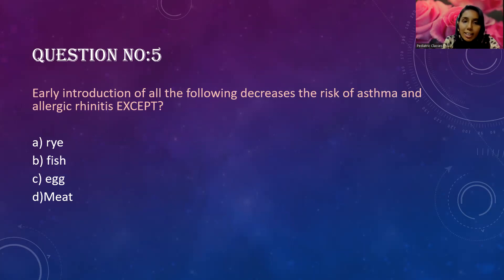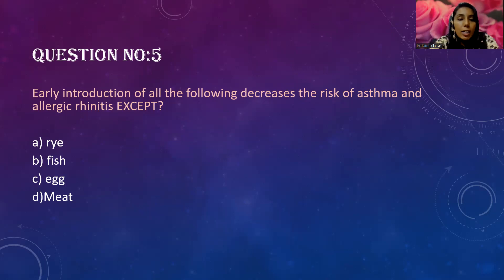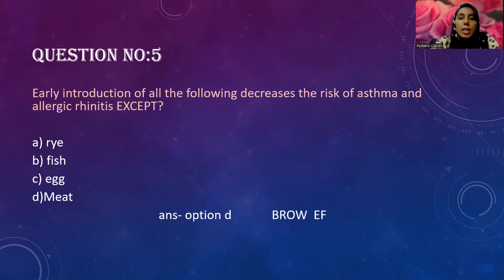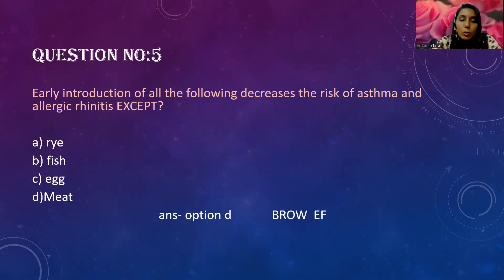Question five: early introduction of all the following decreases the risk of asthma and allergic rhinitis, EXCEPT — Option A: rye; Option B: fish; Option C: oats; Option D: meat. The correct answer is Option D — meat. A helpful mnemonic: 'BROEF' — early introduction of Barley, Rye, Oats, Wheat, Egg, and Fish has been found to reduce the risk of asthma and allergic rhinitis. In this question, the answer is obviously D.